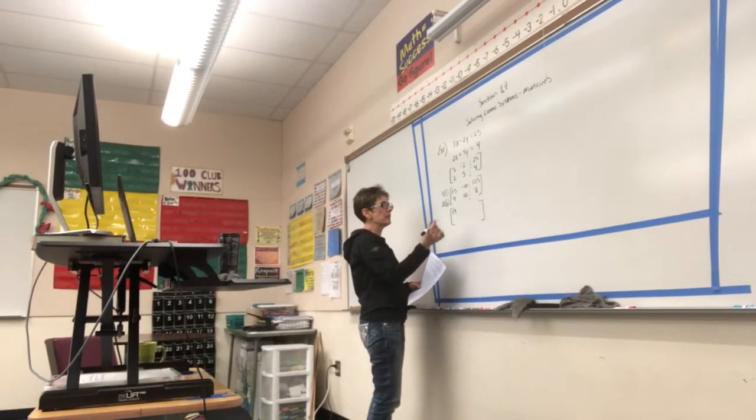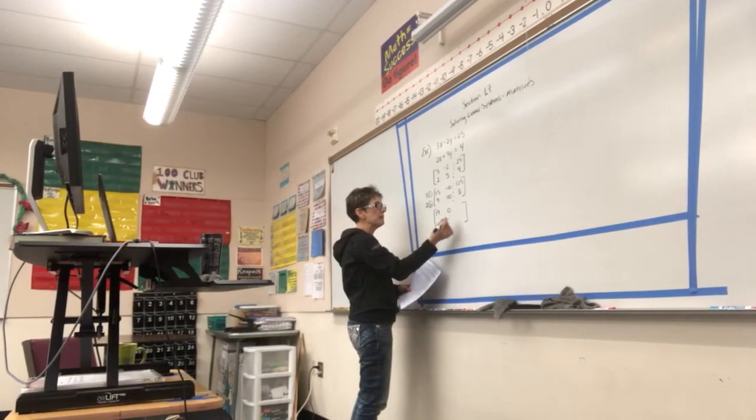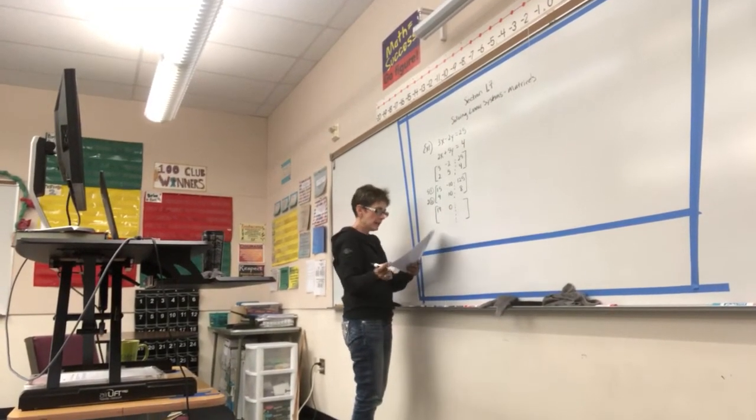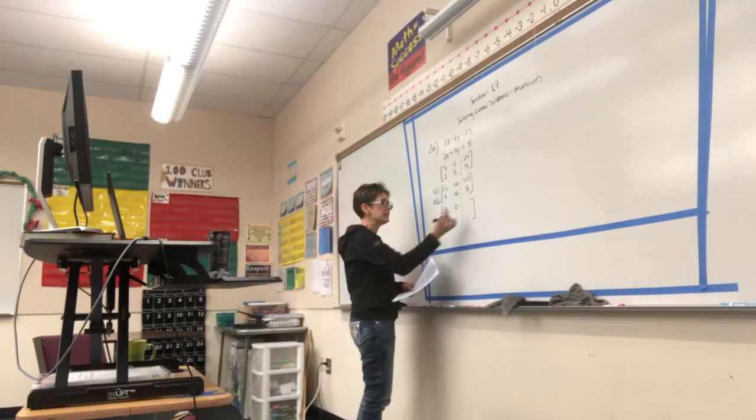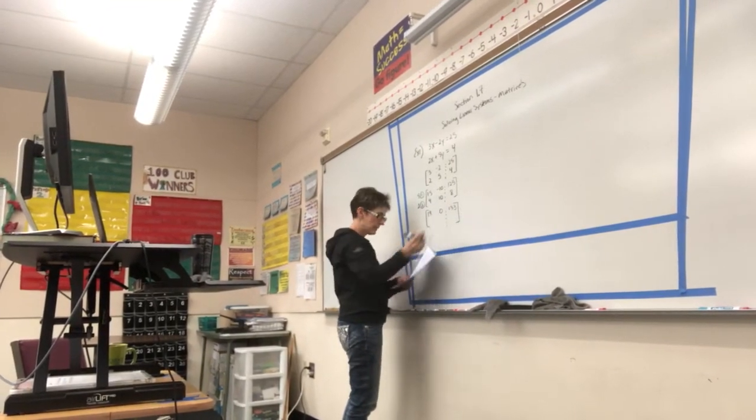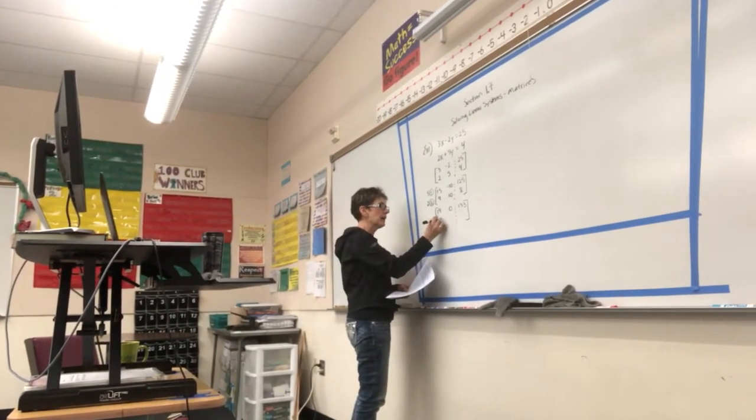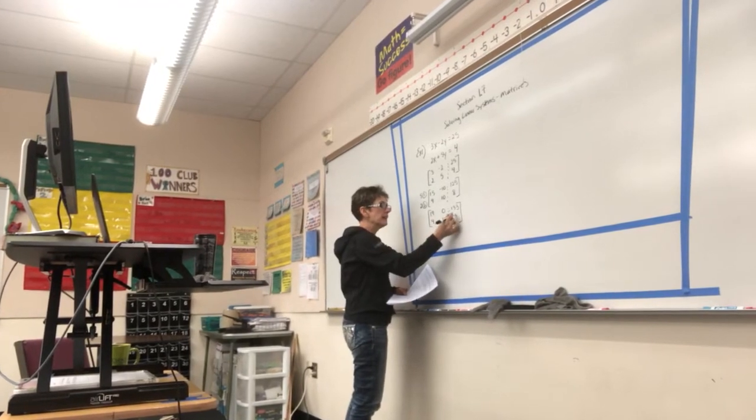So, I'm going to add the two equations and put the result in my top line. 15 plus 4 is 19. Negative 10 plus 10 is 0. And 125 plus 8 is 133. And I'm going to keep the bottom line as 4, 10, and 8.